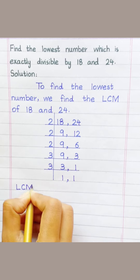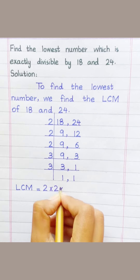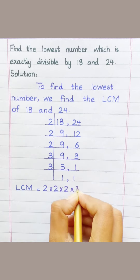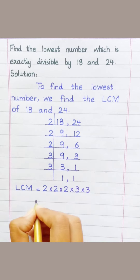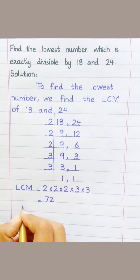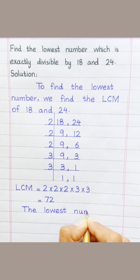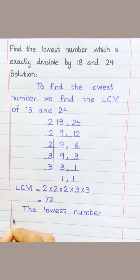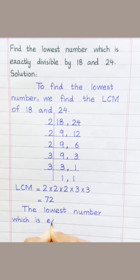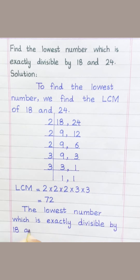LCM equals 2 multiply 2 multiply 2 multiply 3 multiply 3 equals 72. The lowest number which is exactly divisible by 18 and 24 is 72.